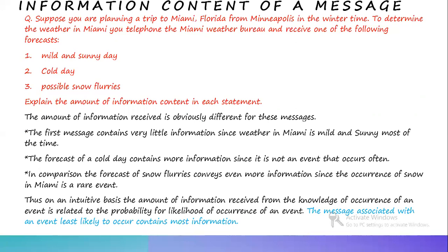Thus, on an intuitive basis, the amount of information received from the knowledge of occurrence of an event is related to the probability or likelihood of occurrence of that event. From the above examples, snow flurries is a very rare event. Therefore, the message associated with an event least likely to occur contains the most information. This is the scenario for understanding the information content of a message.